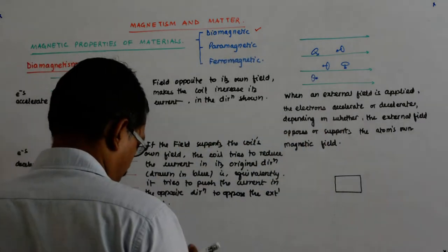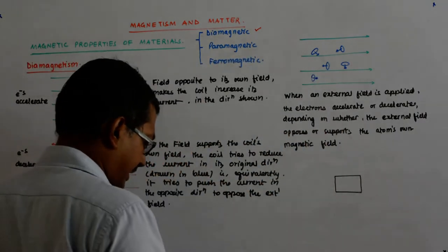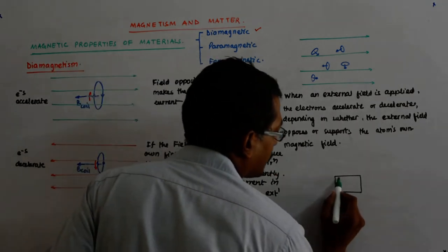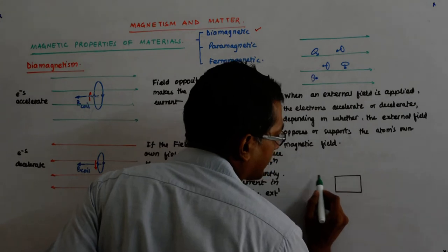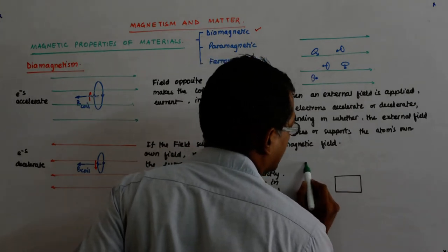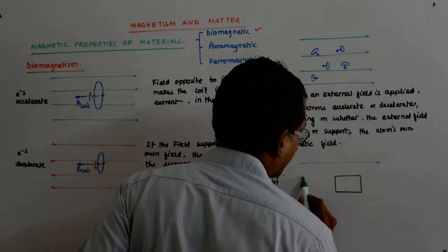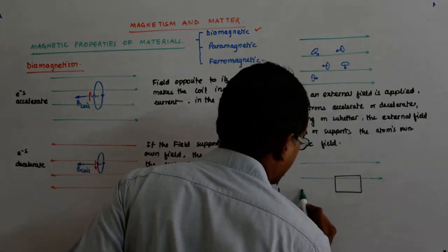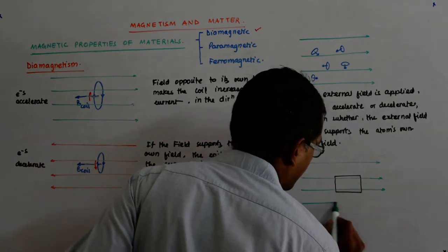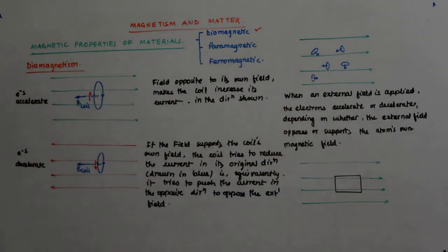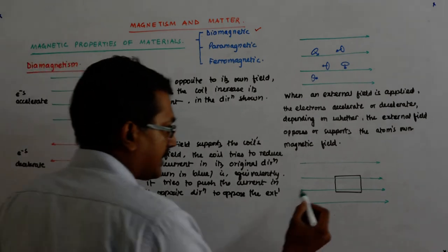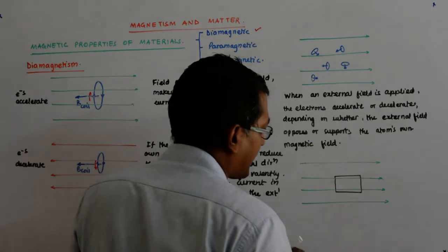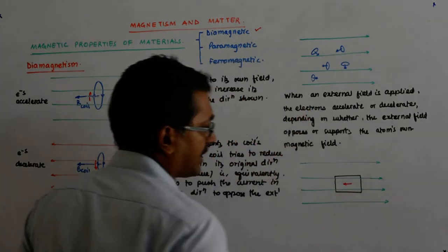So if the field is from left to right, if you apply a field from left to right, what it does is it produces its own field. This is just when you have applied the field — say something like this. You suddenly apply a field.